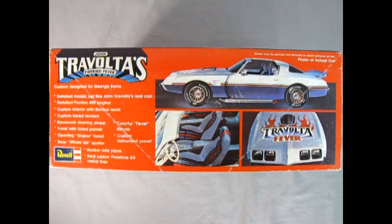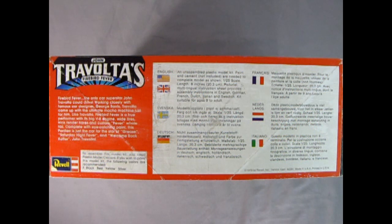On this side of the box we get some more amazing details about John Travolta's Firebird Fever car. It is a custom design by George Barris. This is a detailed model just like John Travolta's real car. Detailed Pontiac 455 cubic inch engine, custom interior with Recaro seats, custom flared fenders, race mark steering wheel, T-roof with tinted panels, colorful fever decals, opening shaker hood, rear whale tail spoiler, custom instrument panel, hooker side pipes, and real rubber Firestone SS radial tires.